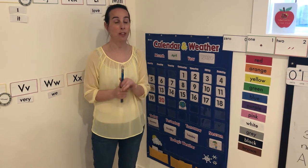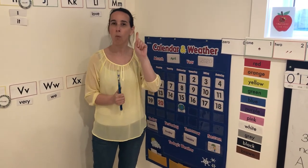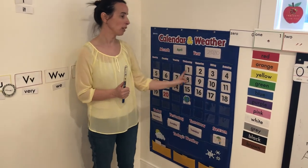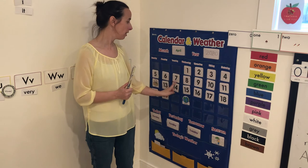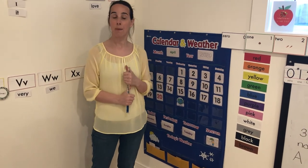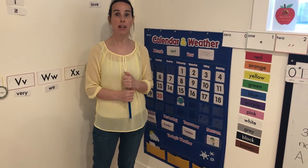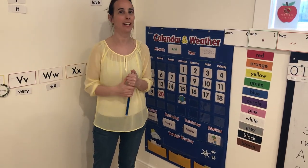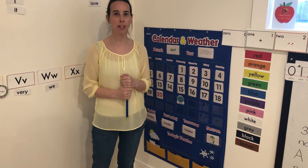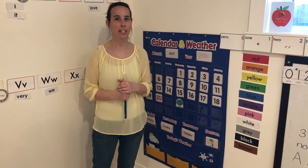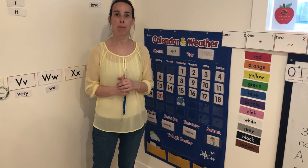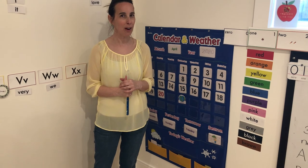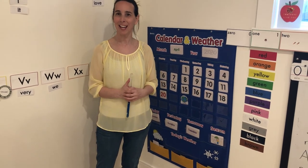Here are the clues to today's number: First, it's a one-digit number — that means it doesn't have two digits, just one. Second, the number is made up of only straight lines — so if it has a curved line in it, it's not the number we're looking for. And the last clue: this number is bigger, or greater than, the number five. See if you can figure it out — I'll let you know what it is tomorrow. Good luck everyone!